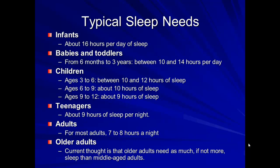Older adults seem to get less sleep, but it's not because they need less — it's because they aren't able to stay asleep. As our brain ages and starts to degrade, we have a harder time keeping ourselves asleep, which is why elderly people often wake up a lot in the middle of the night or very early in the morning.